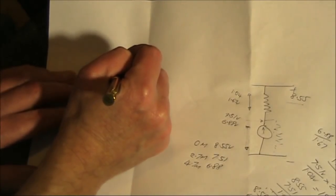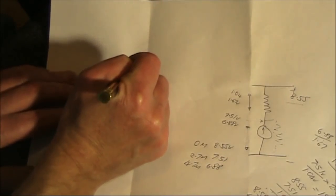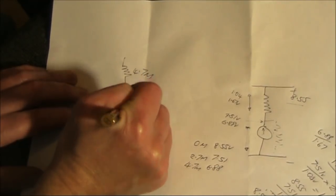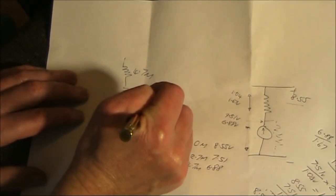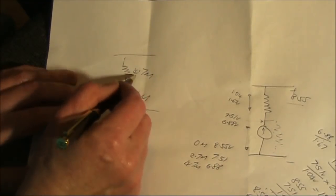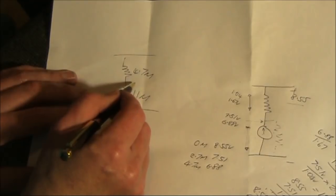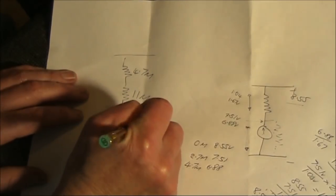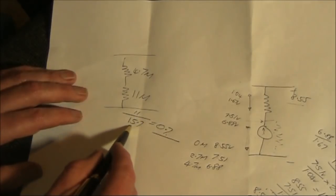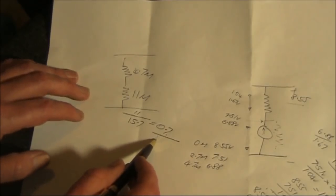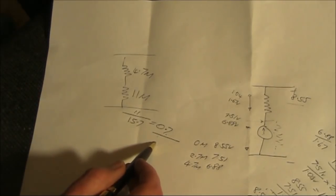Now going back to N5ESE circuit, he used 4.7 meg, and his meter was 11 meg. And if you add these up, 11 plus 4.7 is 15.7, 11 divided by 15.7 is about 0.7. You'll see that ratio, and 1.4, quite often in electronics.